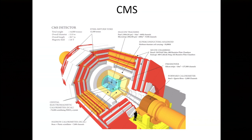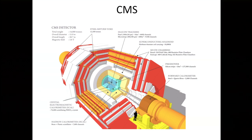CMS is qualitatively similar but denser — it has roughly a 4-Tesla magnetic field compared to Atlas's 2 Tesla, so it can measure muons in a smaller space. It has the same general structure: pixel and silicon tracker inside, then the electromagnetic calorimeter made of lead tungstate crystals — a solid-state scintillator as opposed to Atlas's liquid argon — then the hadronic calorimeter, and the muon system.